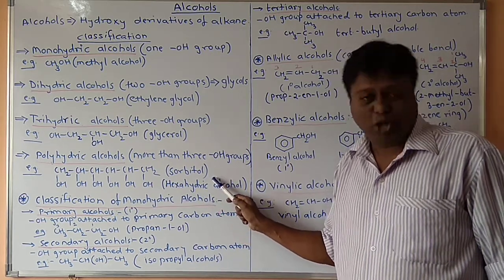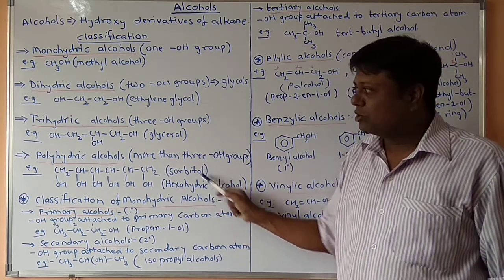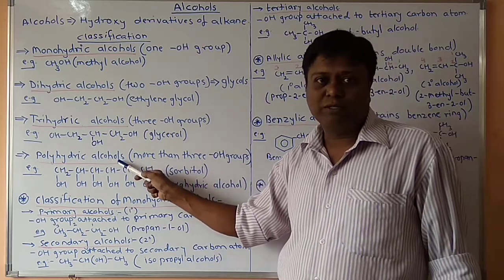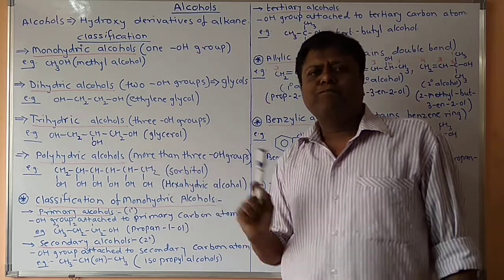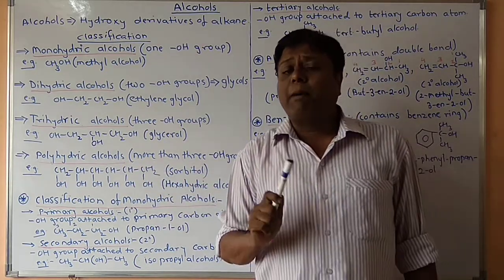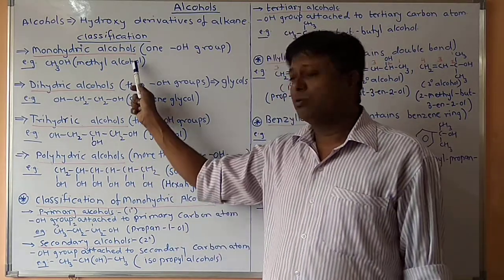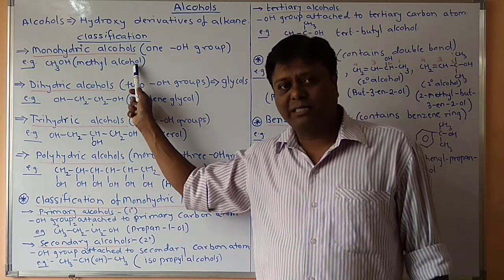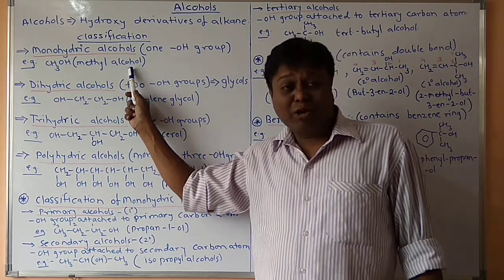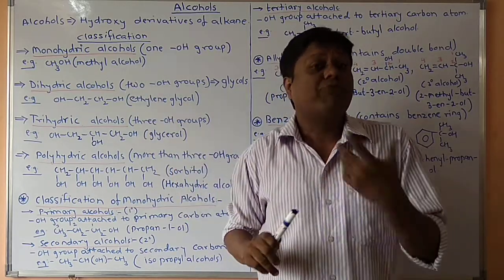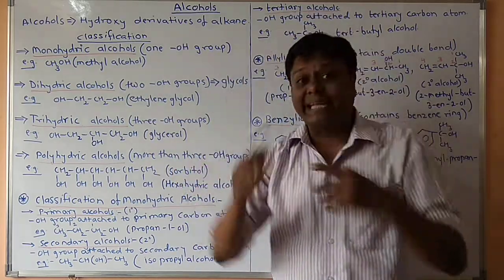The example of a polyhydric alcohol is sorbitol. Now, about monohydric alcohols and their further classification: monohydric alcohols can be further classified into primary alcohol, secondary alcohol, and tertiary alcohol.